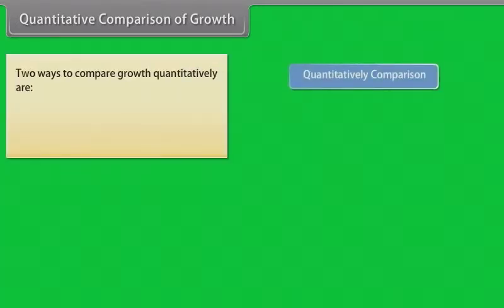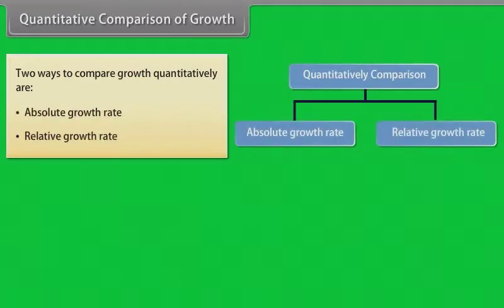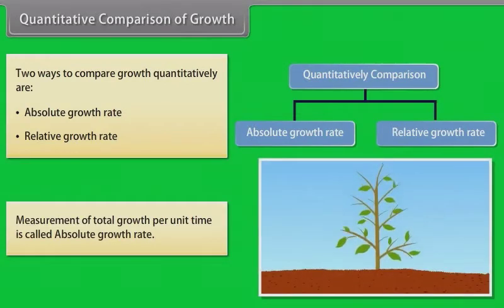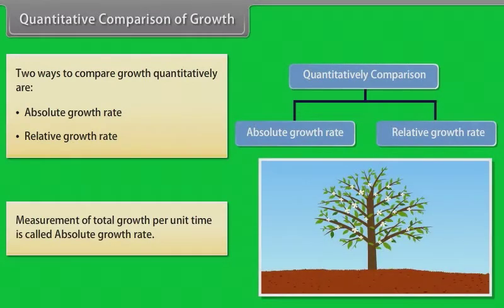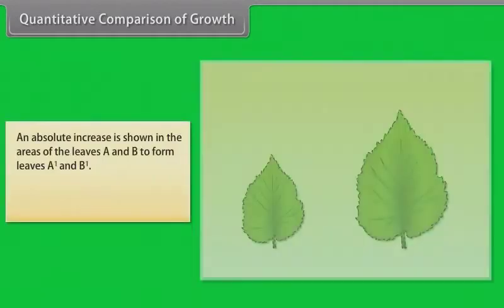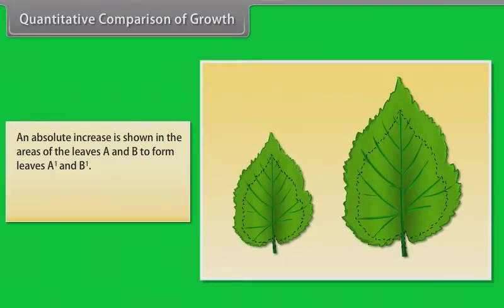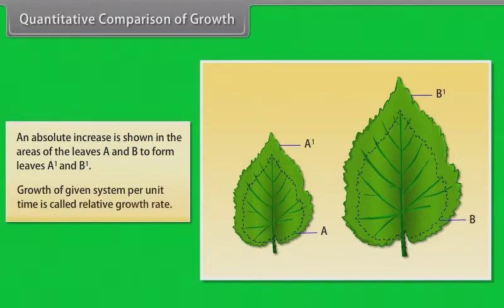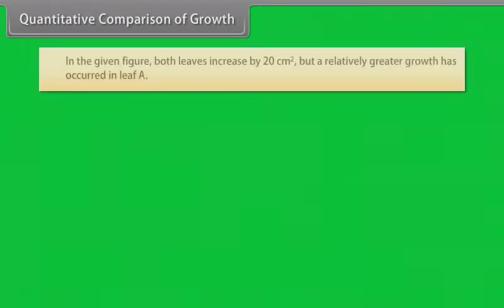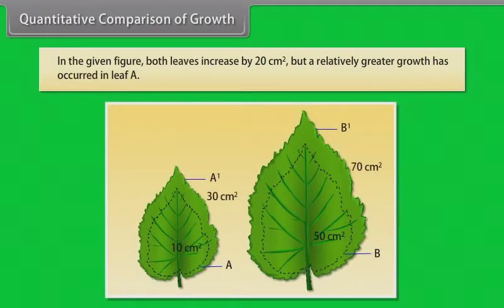Quantitative comparison of growth. Two ways to compare growth quantitatively are absolute growth rate and relative growth rate. Measurement of total growth per unit time is called absolute growth rate. An absolute increase is shown in the areas of the leaves A and B to form leaves A1 and B1. Growth of given system per unit time is called relative growth rate. In the given figure, both leaves increase by 20 cm² but a relatively greater growth has occurred in leaf A.